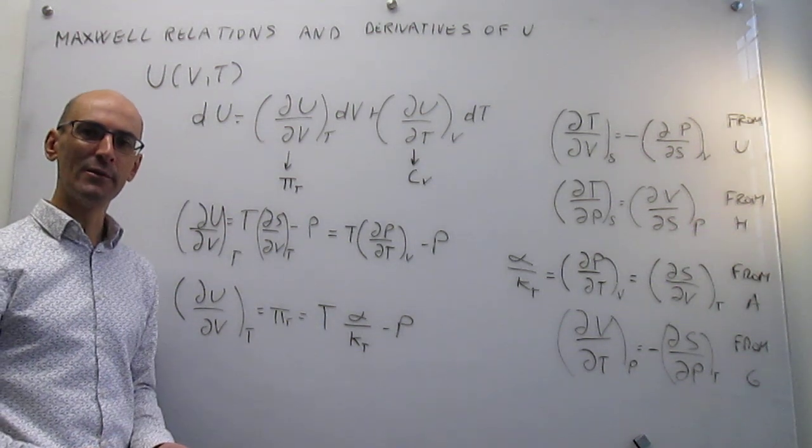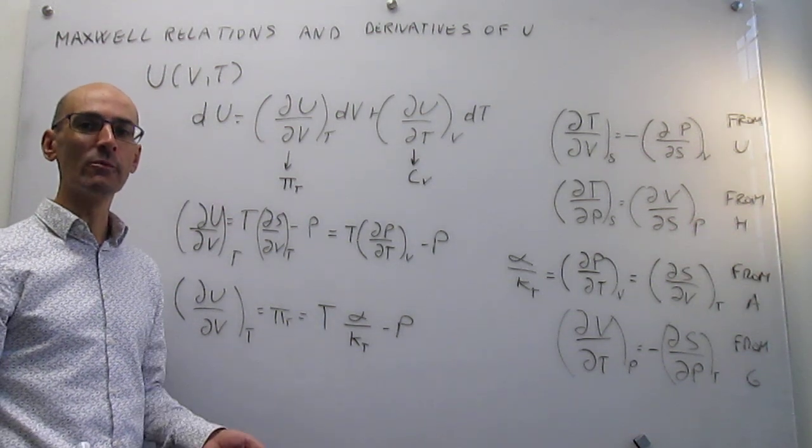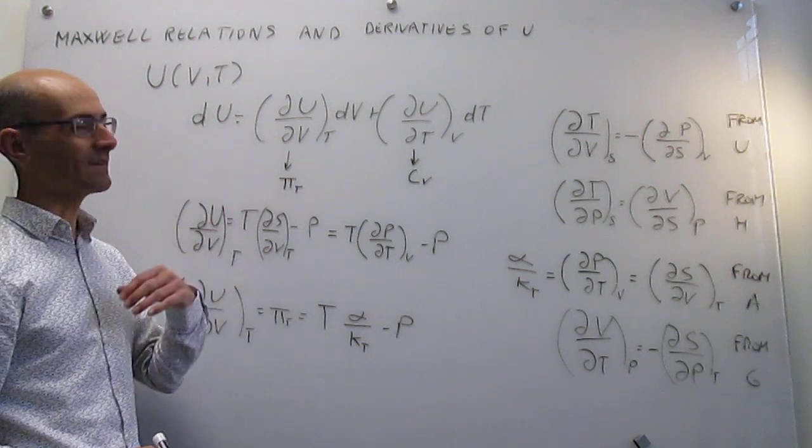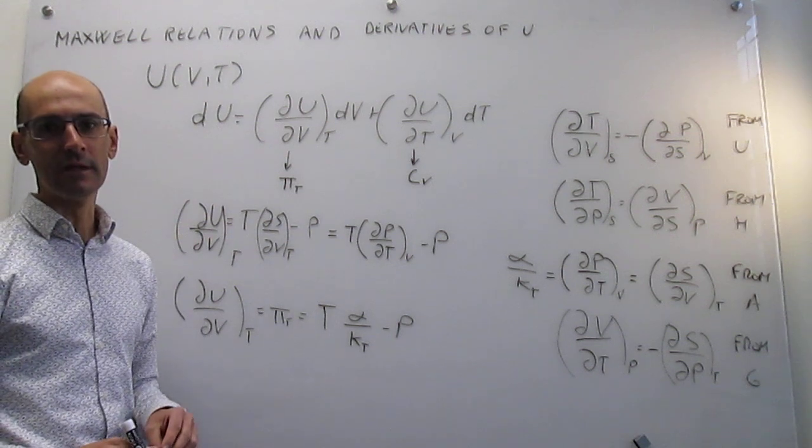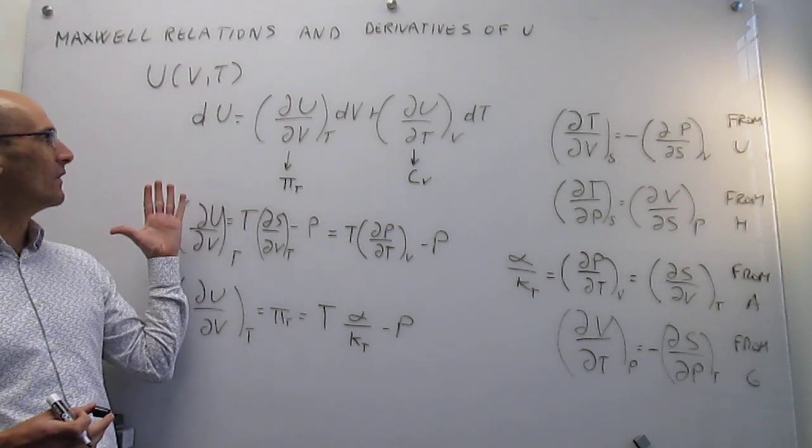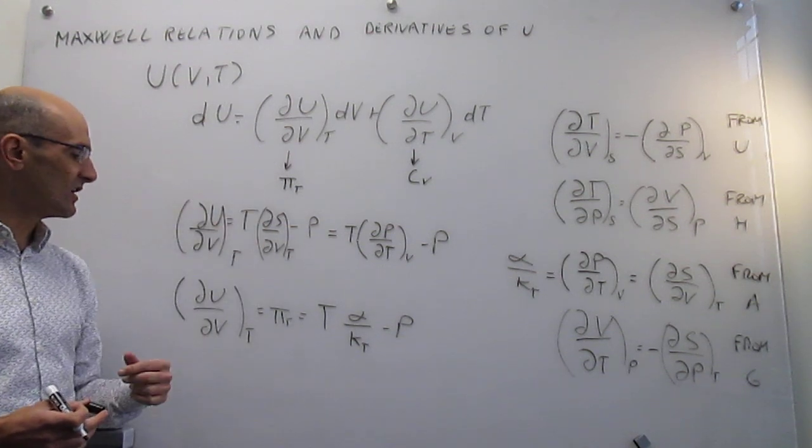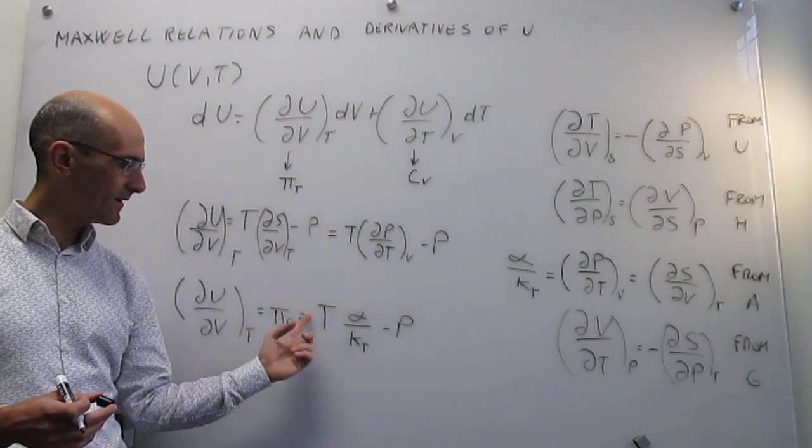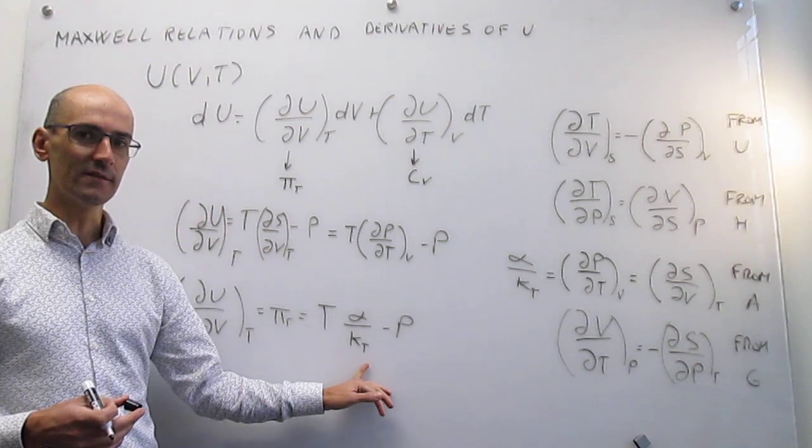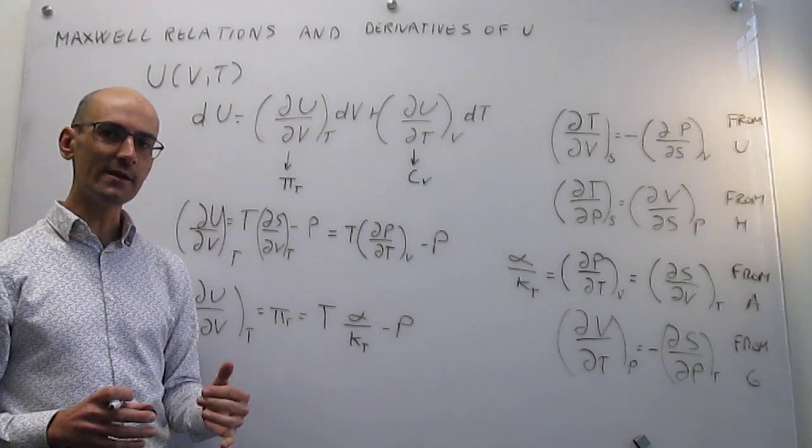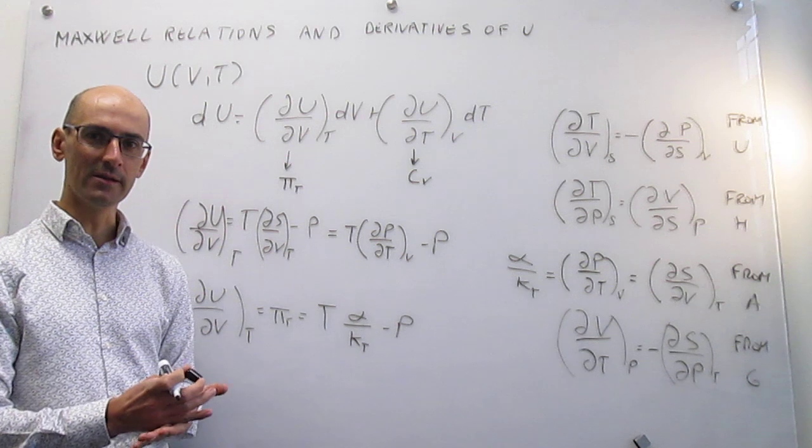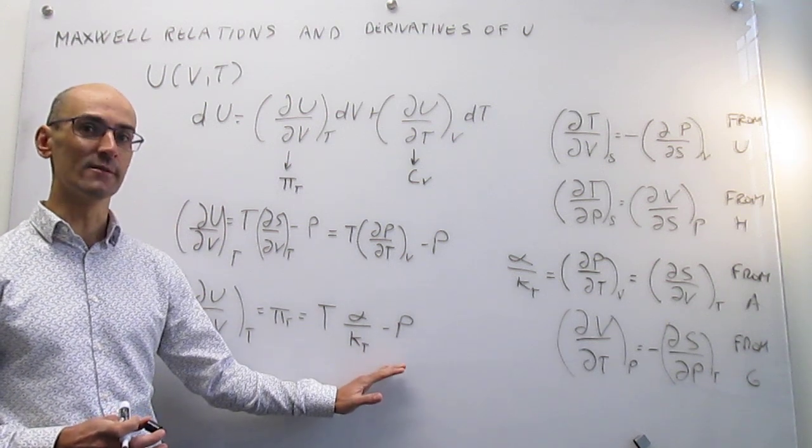So again, this is a beautiful example for how Maxwell relations really help you understand deeper implications of state functions like the internal energy, enthalpy, and so forth. In this particular case, what we've been able to see is that the way that the internal energy changes with volume has a very nice relation. And something that is important is that this is universal. This has no limitations. It applies to an ideal gas, it applies to a real gas, it applies to solids, it applies to liquids. So it has a universal application, which is also very convenient.